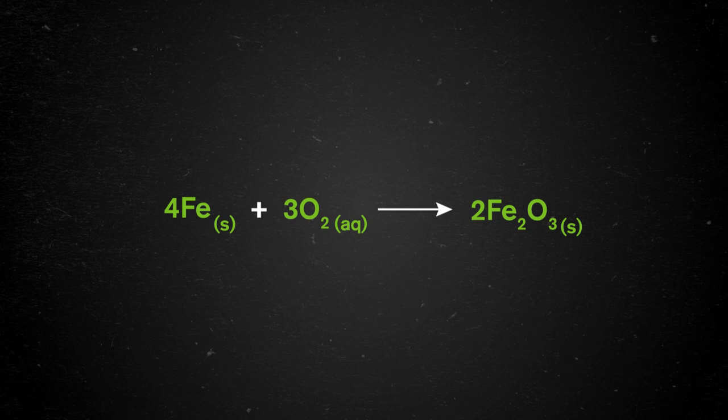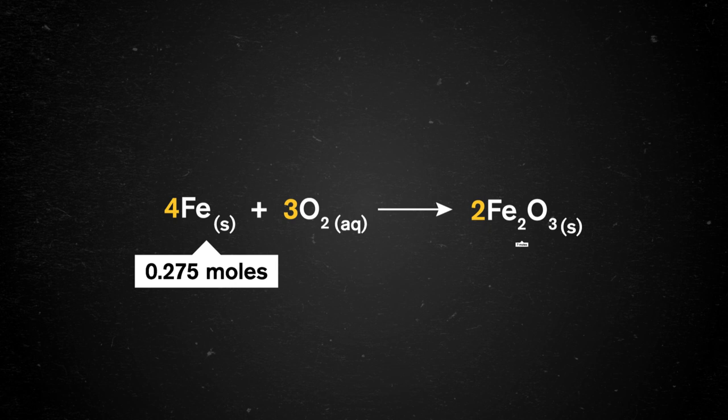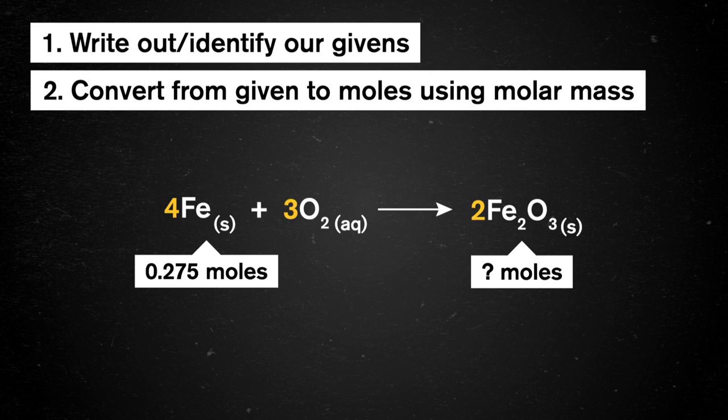Using the reaction between iron and oxygen to produce iron oxide, let's say the pan started with 0.275 moles of iron, and we need to know how many moles of iron oxide are produced. We have our givens for step 1, and step 2 would be to convert to moles, but we can actually skip that this time, since we're already in moles.